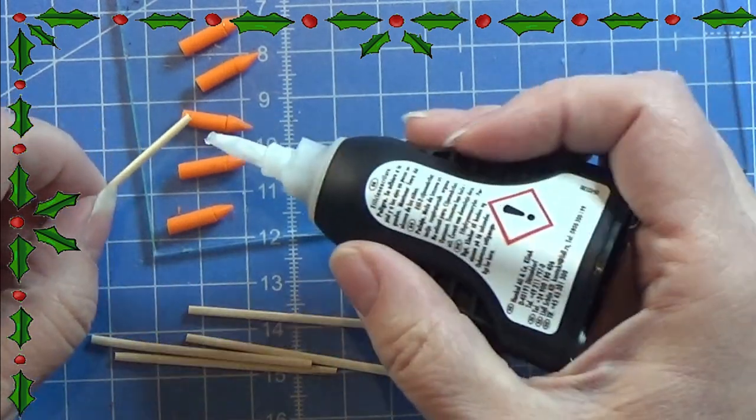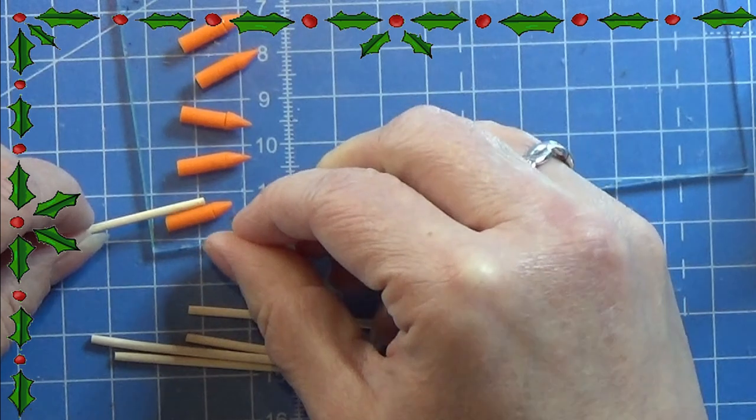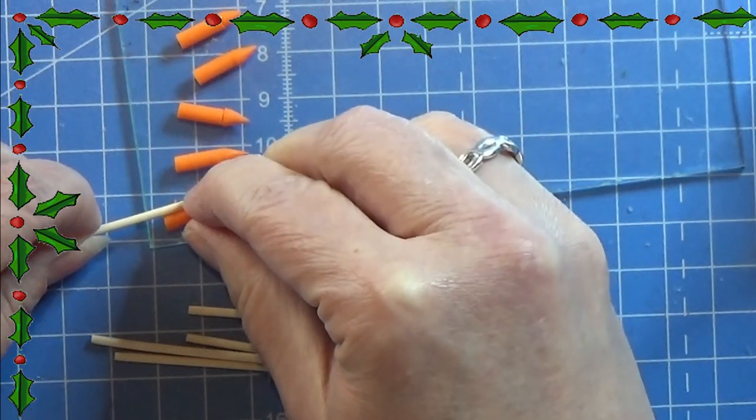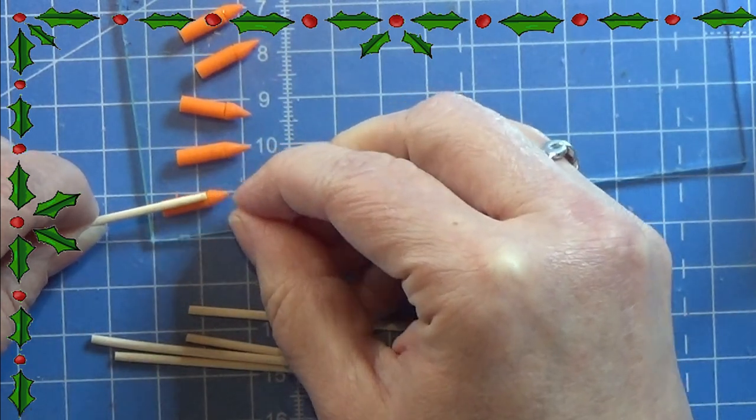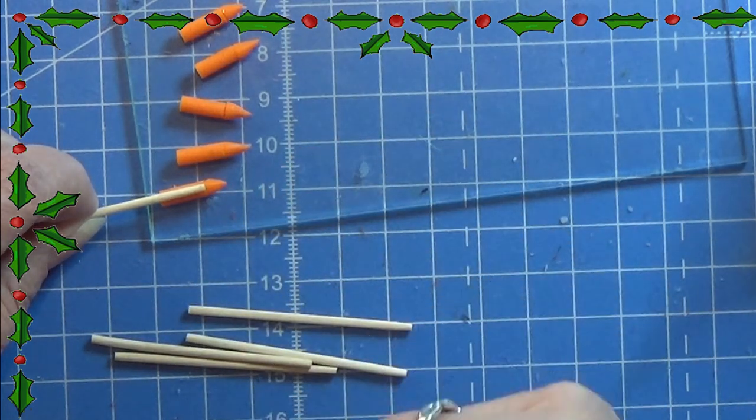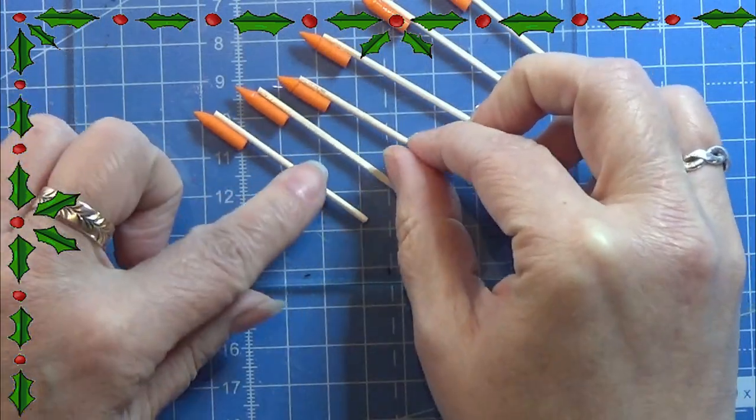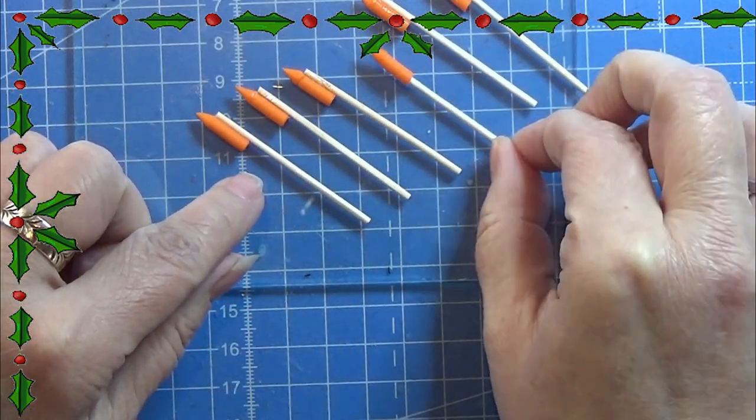Then I am going to take the little toothpick and I am gluing it onto the side of the cylinder of this little rocket here. Here I have my rockets ready for the next step.